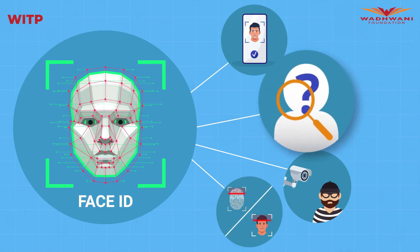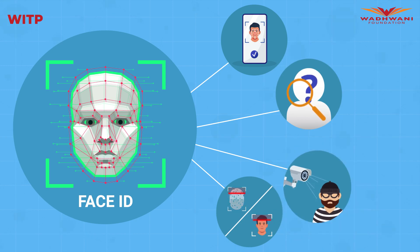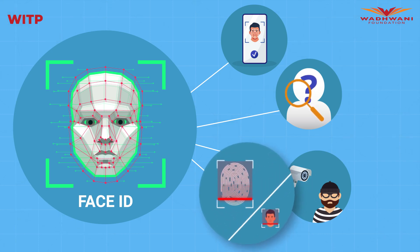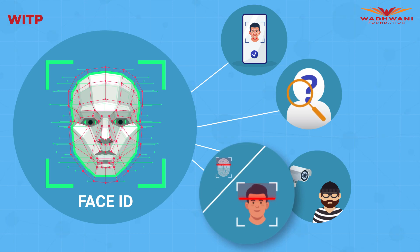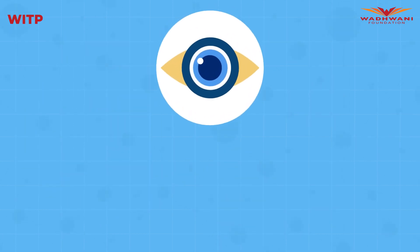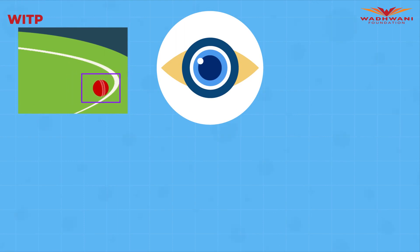Government bodies can use face recognition to identify missing people and to identify wanted criminals and suspects from CCTV footage. Face recognition has also helped make our world safer during pandemic times by replacing touch-based biometric attendance with face-based attendance in offices.